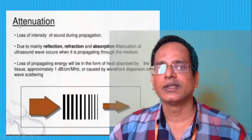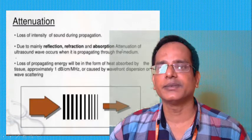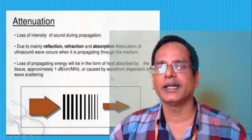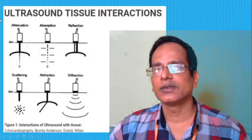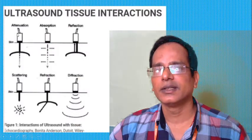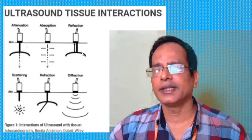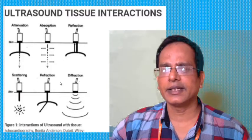The fifth reaction is attenuation: the loss of intensity of sound during propagation, due mainly to reflection, refraction, and absorption. Attenuation occurs as ultrasound waves propagate through a medium in a compression and rarefaction manner. The loss of propagating energy is in the form of heat absorbed by tissues, approximately 1 dB per centimeter per 1 MHz, or caused by wavefront dispersion or wave scattering. In the diagram, attenuation, absorption, reflection, scattering, refraction, and diffraction are all illustrated as different tissue reactions.